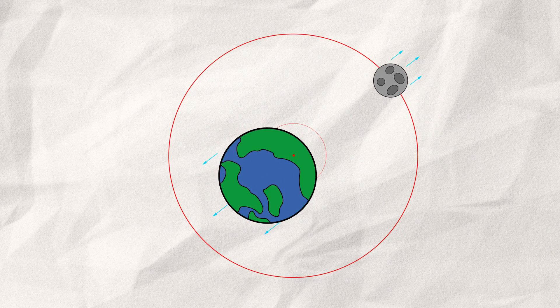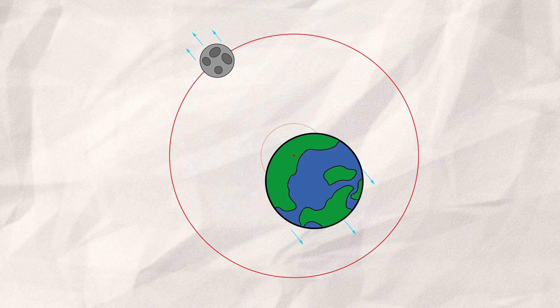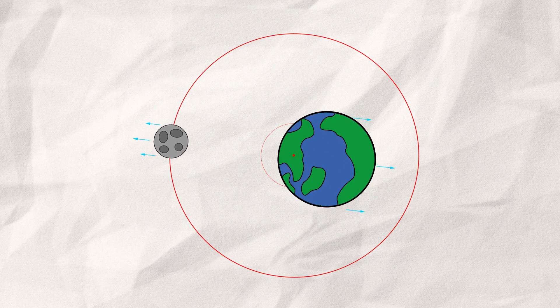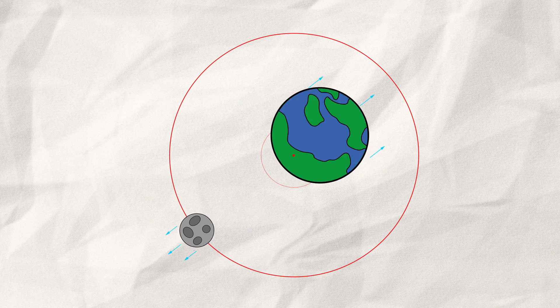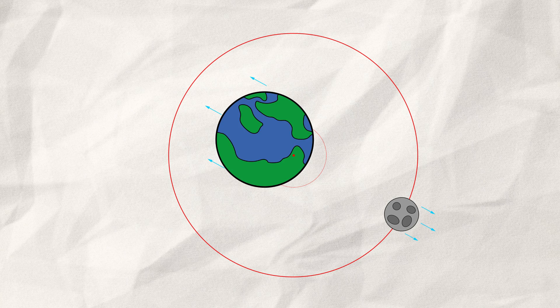This forces our planet to rotate together with the moon around their joint barycenter, completely independent from the rotation around their own axis. As you can see, this movement creates the centrifugal force we've seen earlier. All arrows point away from the moon and are of the same strength.